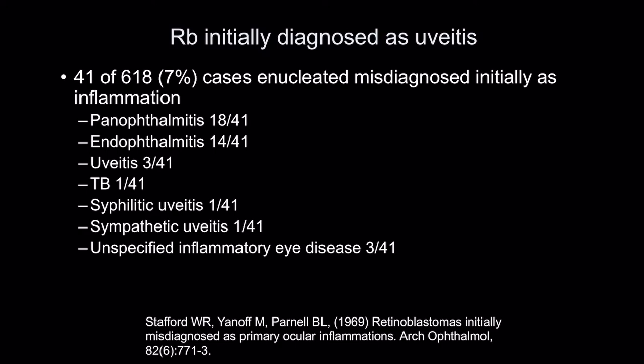So retinoblastoma can initially be misdiagnosed as uveitis. In a classical paper in 1969, they looked at enucleated eyes and found that 7% of those 618 cases were initially misdiagnosed as inflammation — panophthalmitis, endophthalmitis, uveitis, TB, syphilitic uveitis, and unspecified inflammatory eye disease.